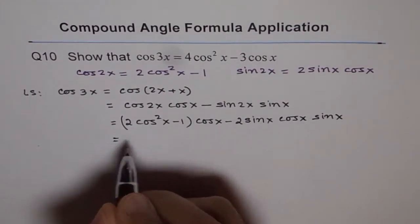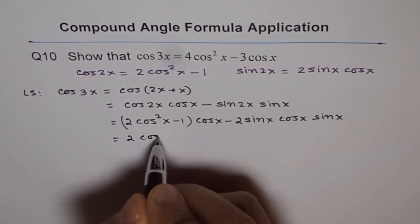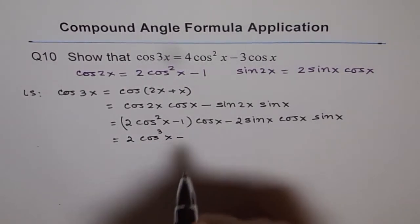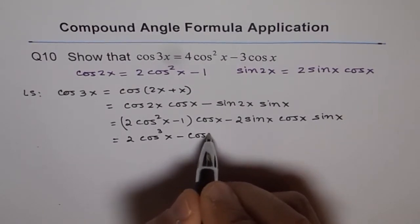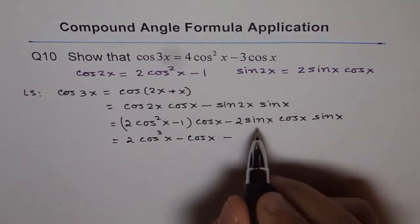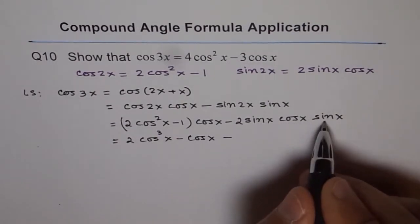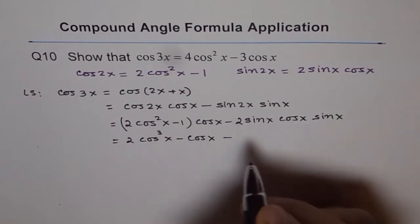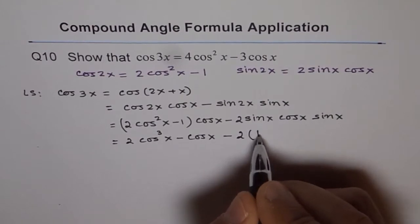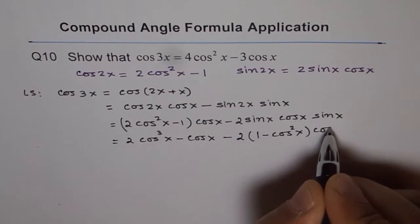Now let us expand this. So we get 2 cos squared x times cos x will give us cos cubed x minus 1 times cos x, and here we have 2 sin squared x and cos x. So instead of writing sin squared x, I will convert sin squared x into 1 minus cos squared x. So I will write 2, and instead of sin squared x, I am writing 1 minus cos squared x times this cos x.